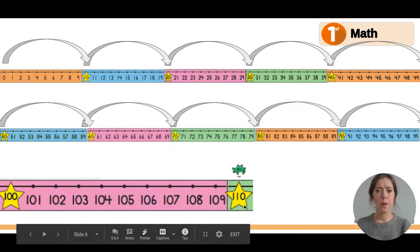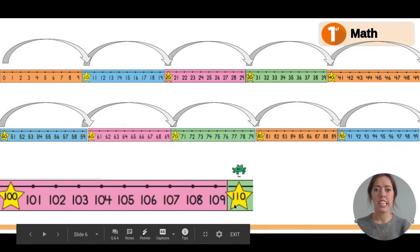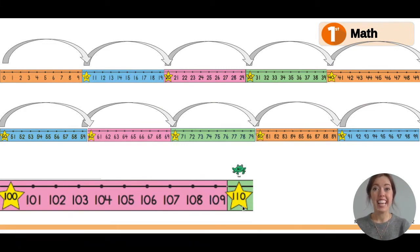Look, in the number 110, I can kind of see the number 11 here. And then there's a zero. This says 110. What's another way we could see how many tens are in 110? Could we use cube towers? Ten rods? Let's look.